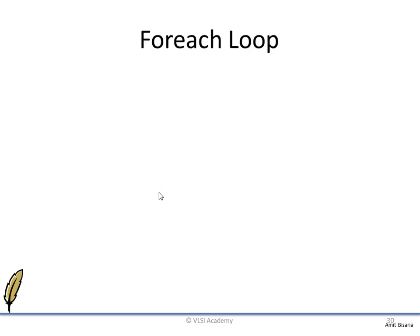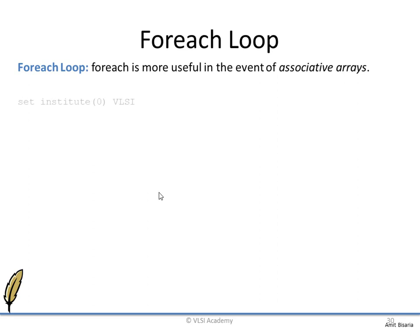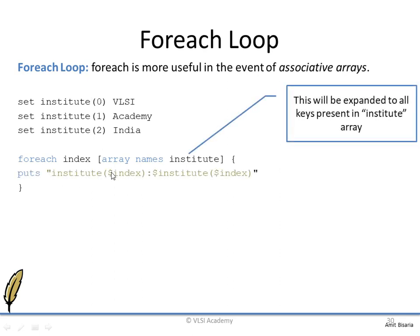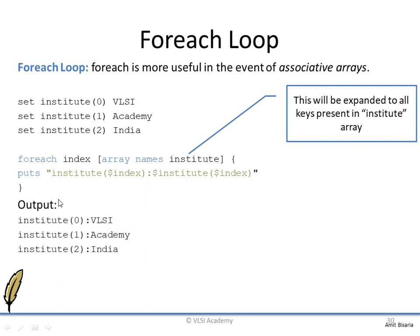The 'foreach' loop is very useful for iterating over associative arrays. First the array is created, then: 'foreach index [array names institute]' — the 'array names institute' command gives us all indexes present in the array, which here would be 0, 1, and 2. The value for each index is then retrieved. This is similar to what we did with the for loop, but easier because 'array names' automatically gives us all indexes. The output will look something like this. Thank you.